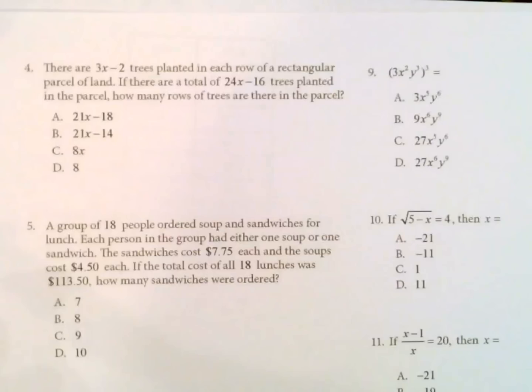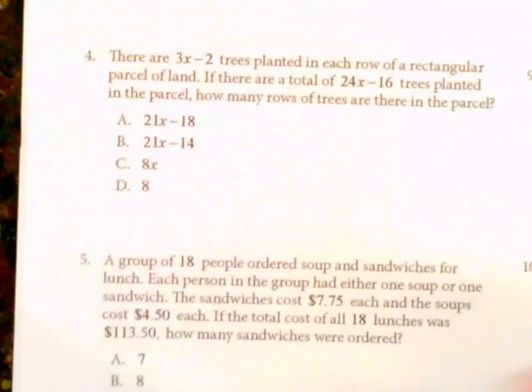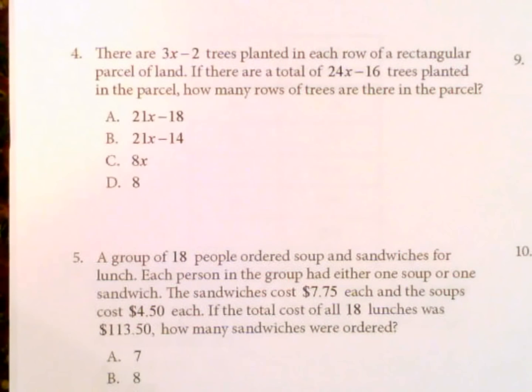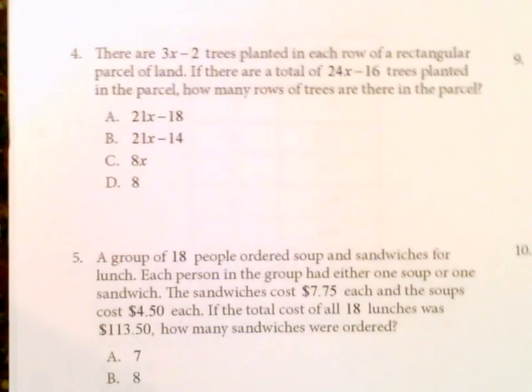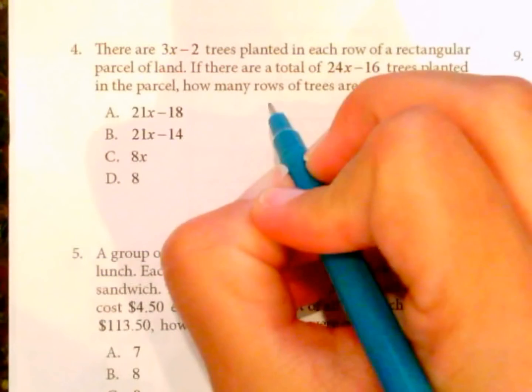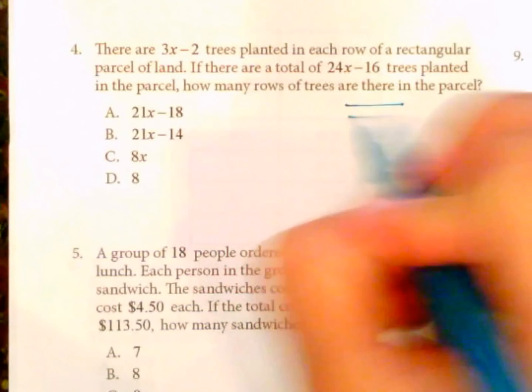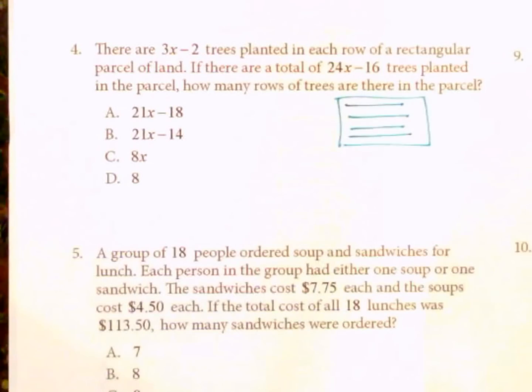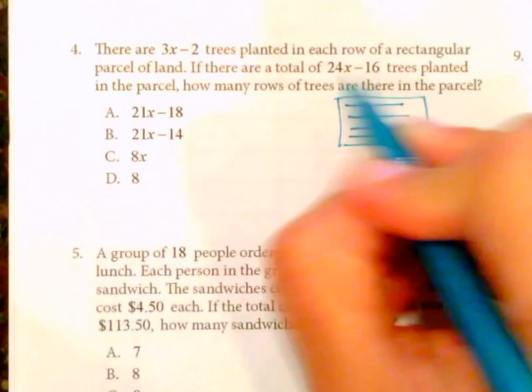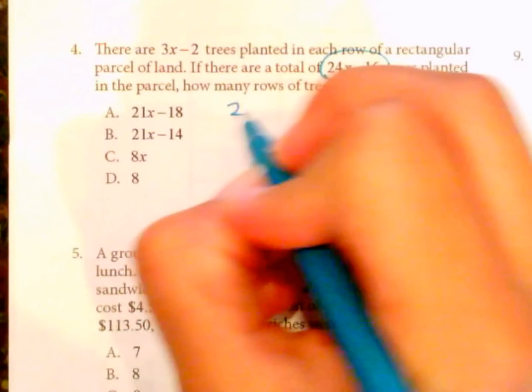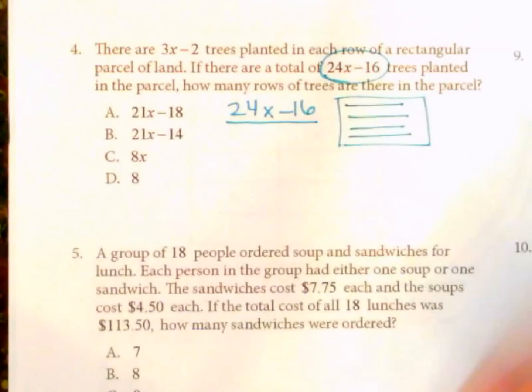Okay. Continuing on with number 4. There are 3x minus 2 trees planted in each row of a rectangular parcel of land. If there are a total of 24x minus 16 trees planted in the parcel, how many rows of trees are there in the parcel? So this is kind of a messy sounding problem, but it's really simple. If we think about rows, we have a rectangular parcel of land, and we want to know how many rows of trees there are. So we need to take the total, this amount, and divide it by the number in each row.